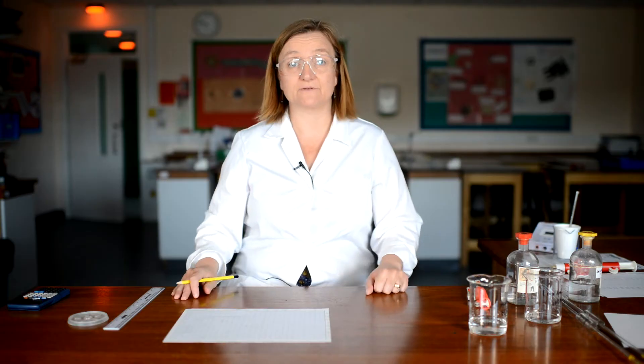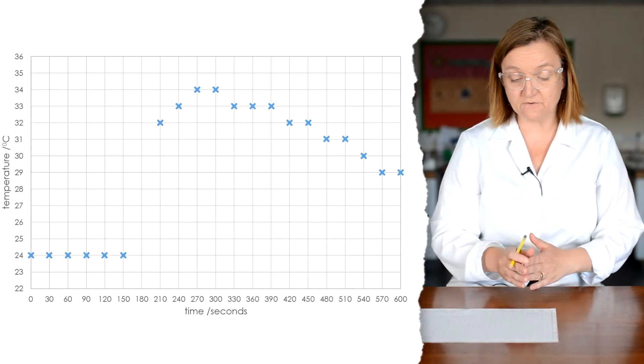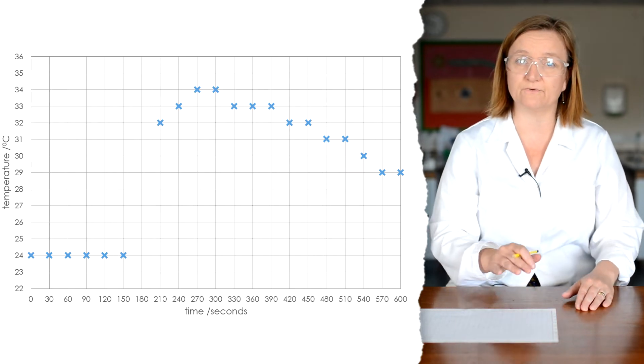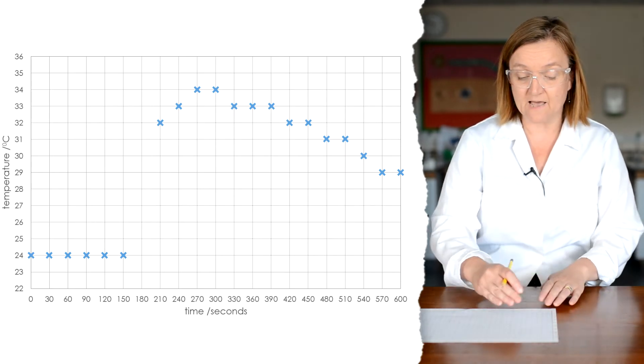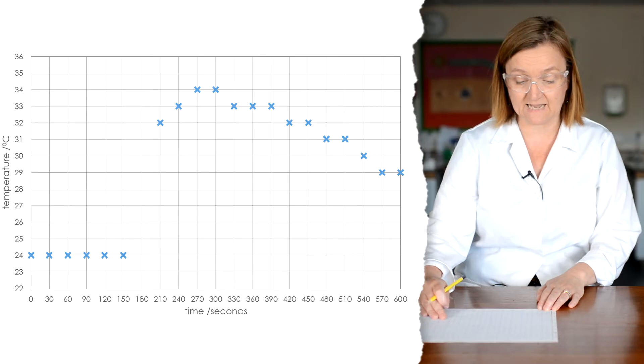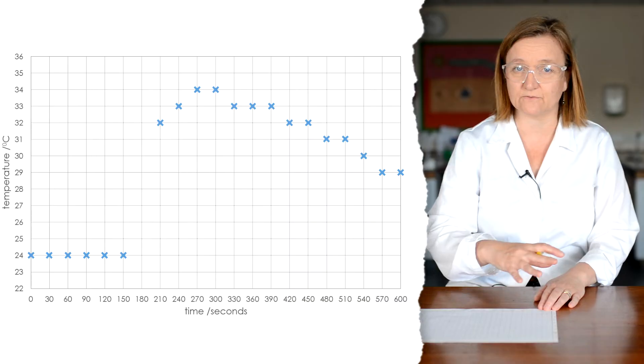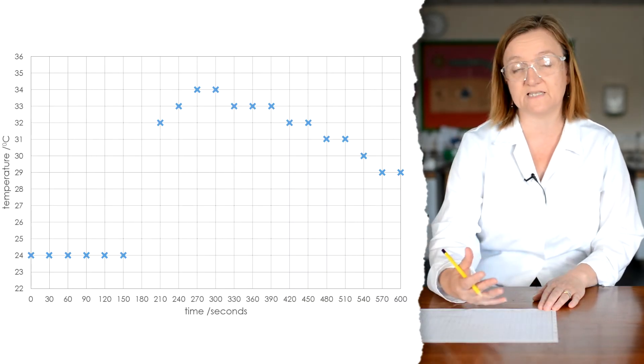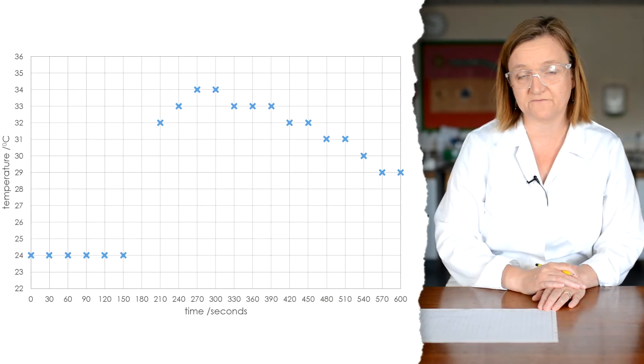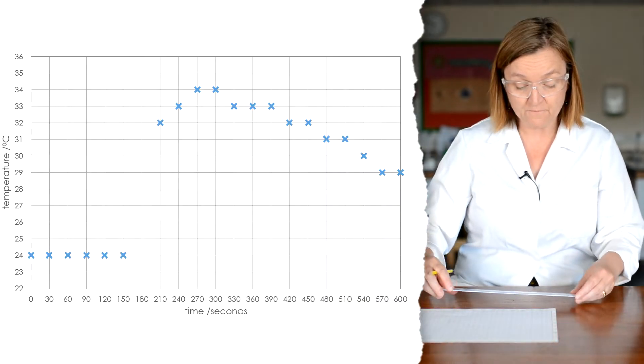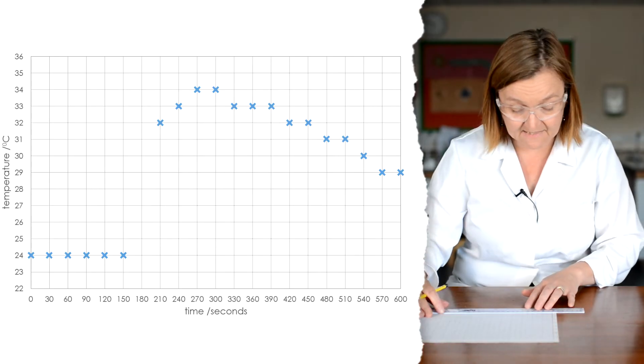So I've collected all my results now. In fact, I took measurements right up until 10 minutes, and I've plotted them on my graph here. And there's obviously two very clear parts to the graph. First of all, the temperature which was constant before I added the acid, and then the part of the graph once the acid had been added. Now, we're not going to just do a line of best fit or something like that that you might have seen in other graphs. We're actually going to consider the two parts of the graph separately. Obviously, the flat part of the graph to start with, where the temperature was constant before we added the acid.